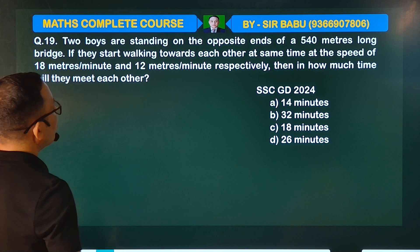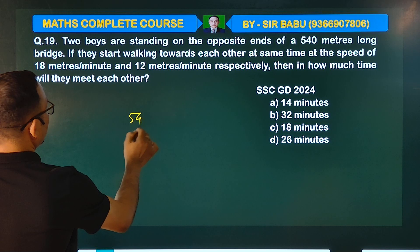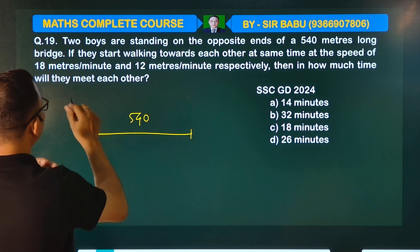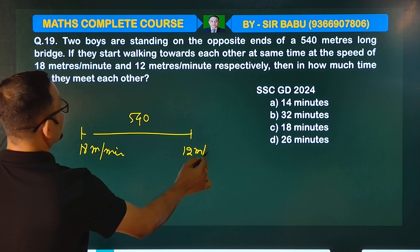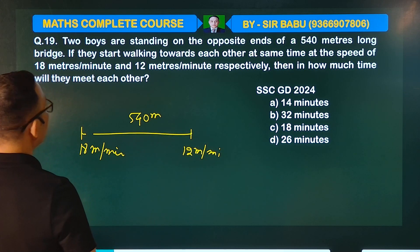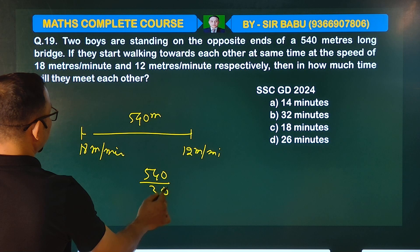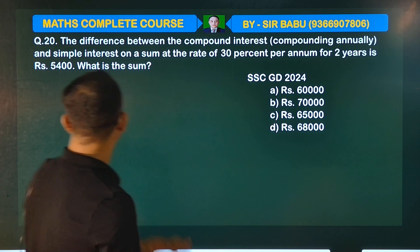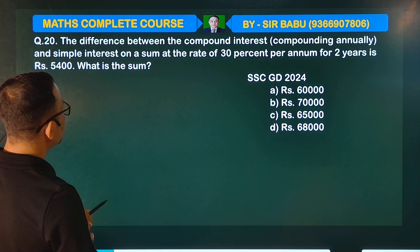Two people are standing on opposite ends of a 540-meter long bridge. If they start walking towards each other at the same time at a speed of 18 meters per minute, in how much time will they meet?